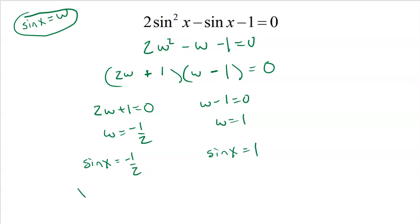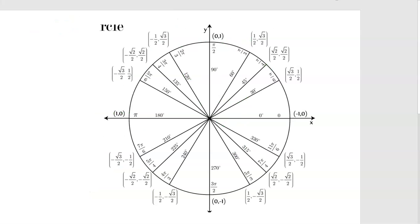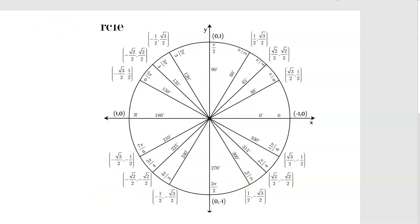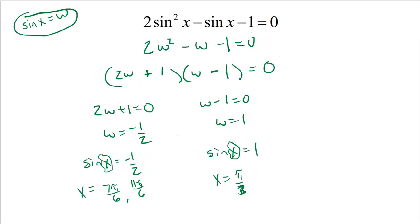Both values are recognizable from the unit circle. For sin x = -1/2, I'm looking for an angle where the y-coordinate is -1/2. That happens at 7π/6 and 11π/6. For sin x = 1, the angle with a y-value of 1 is π/2. So there are three answers to this equation: 7π/6, 11π/6, and π/2. The key idea is to treat sin x like its own variable, then solve for the angle at the end.